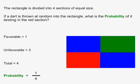This is a game where we throw a dart at a colored target. The target is shaped like a rectangle and has four sections, which are four rectangles each the same size. If a dart is thrown at random into the rectangle, what is the probability of it landing in the red section? There is only one favorable case, which is the red rectangle. There are three unfavorable cases, which are the two blue rectangles and the green rectangle. The total number of cases is 4. Probability is favorable over total, so the probability of a dart thrown randomly landing on the red section is 1 over 4.